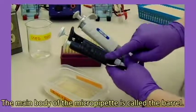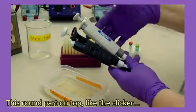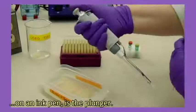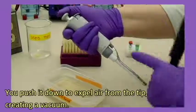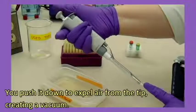The main body of the micropipette is called the barrel. This round part on top, like the clicker on an ink pen, is the plunger. You push it down to expel air from the tip, creating a vacuum.